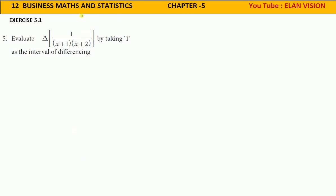12 standard business maths and statistics chapter 5, youtube channel Elan Vision, exercise 5.1. Fifth question: evaluate delta 1 divided by x plus 1 into x plus 2 by taking 1 as the interval of differencing.